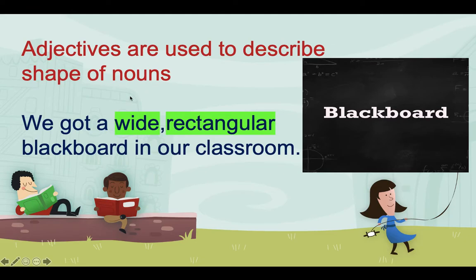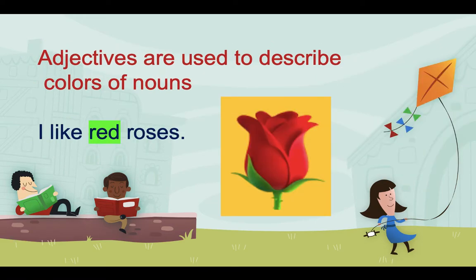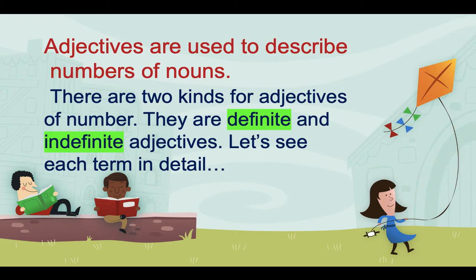Adjectives are also used to describe the shape of nouns. For example: 'We got a wide, rectangular blackboard in our classroom.' The words 'wide' and 'rectangular' describe the shape of the noun 'blackboard.' Adjectives are also used to describe the color of nouns: 'I like red roses.' Here 'red' is the color adjective describing the noun 'rose.'